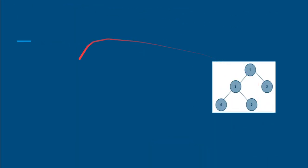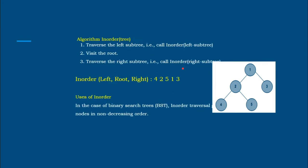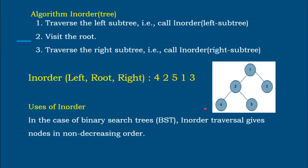Let us see with an example how traversal works. This is a sample tree having nodes 1, 2, 3, 4, and 5. The in-order algorithm says: traverse the left subtree, then visit the node, then traverse the right subtree. So starting from the root, you go down the left subtree first, then return to the root, and then visit the right subtree. This is how in-order traversal should go.